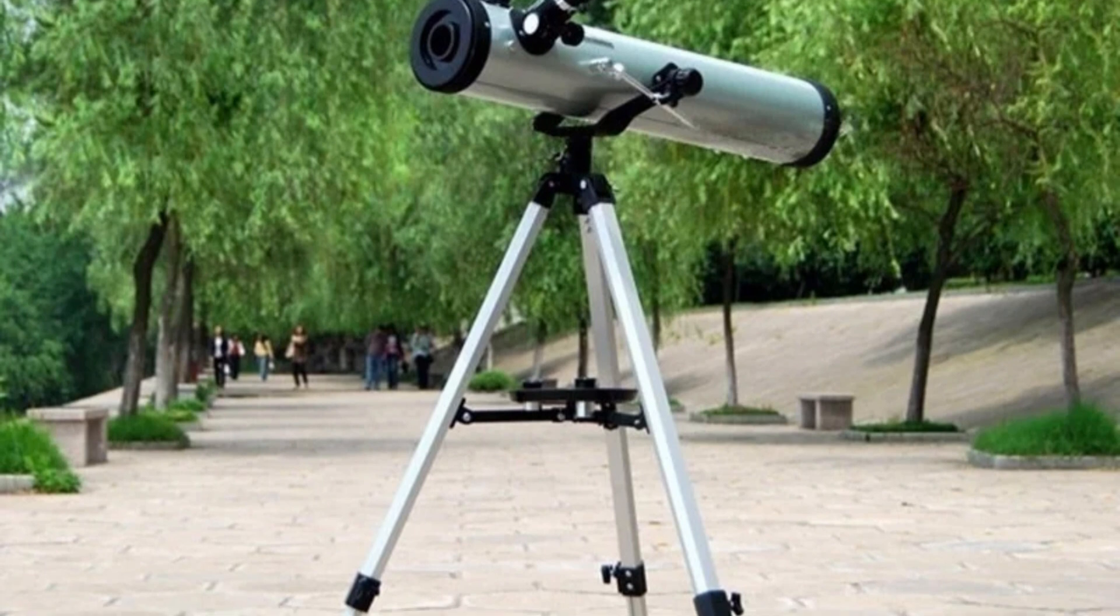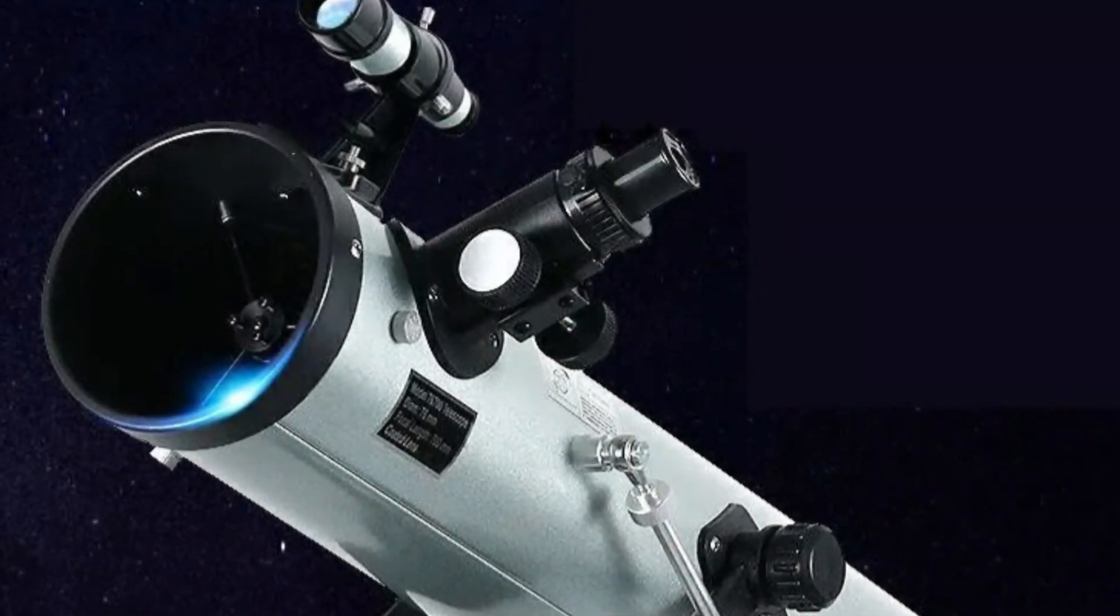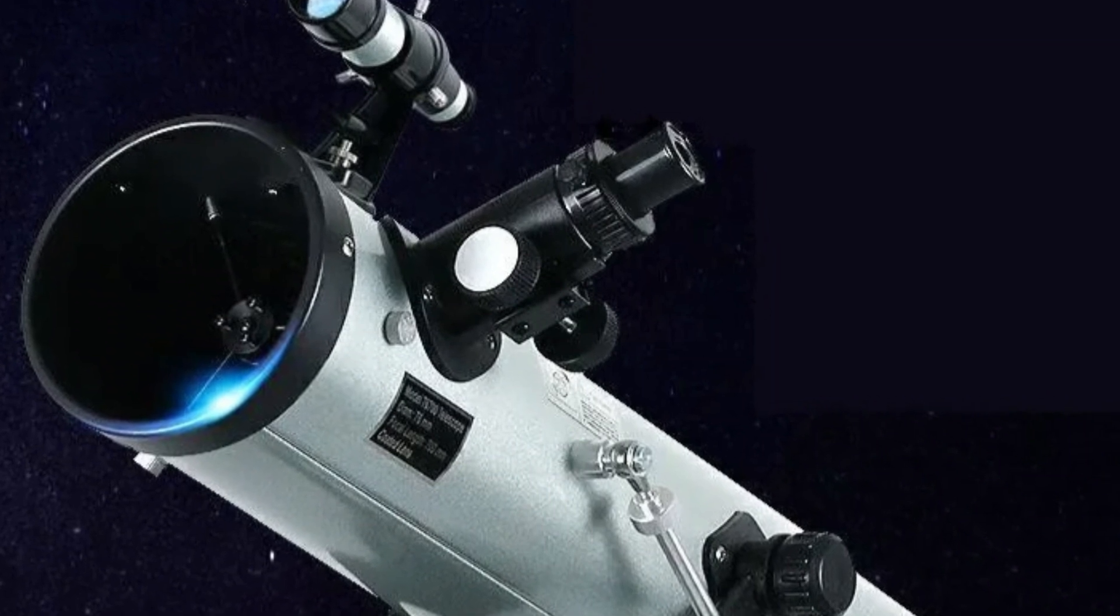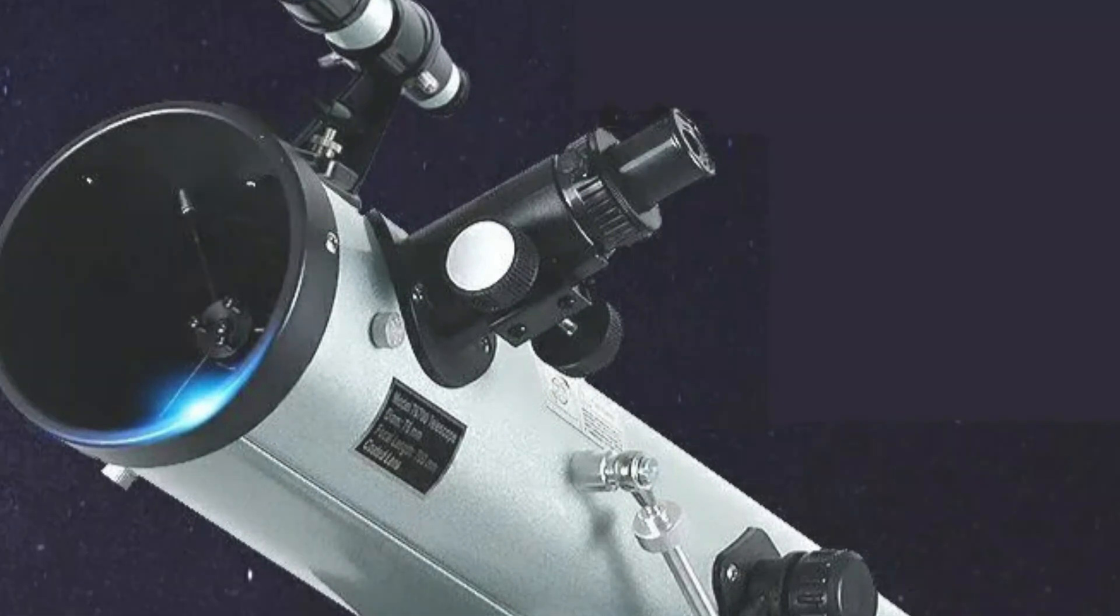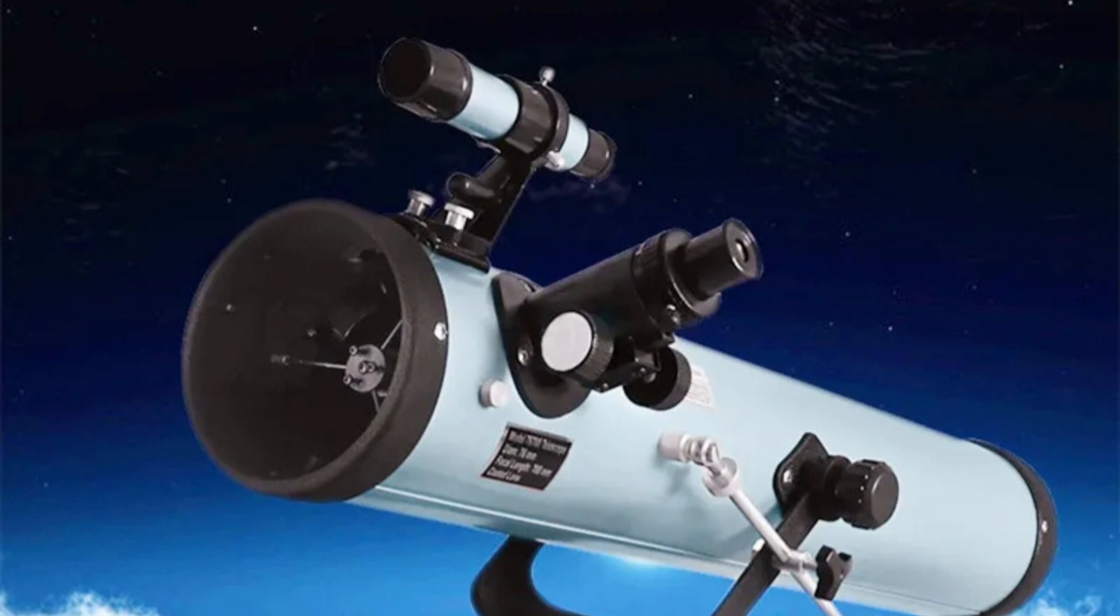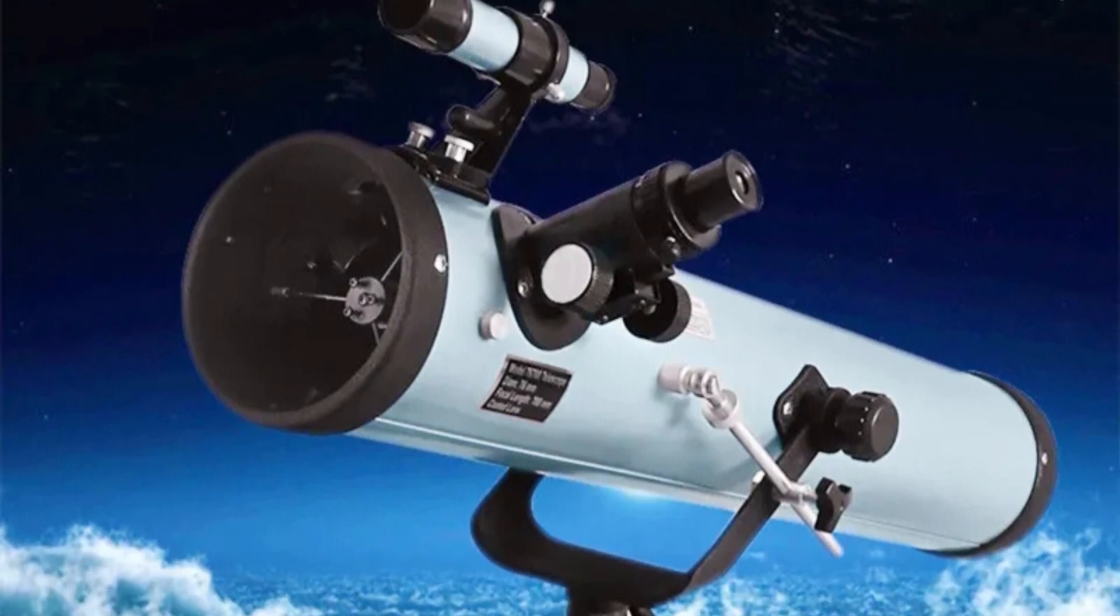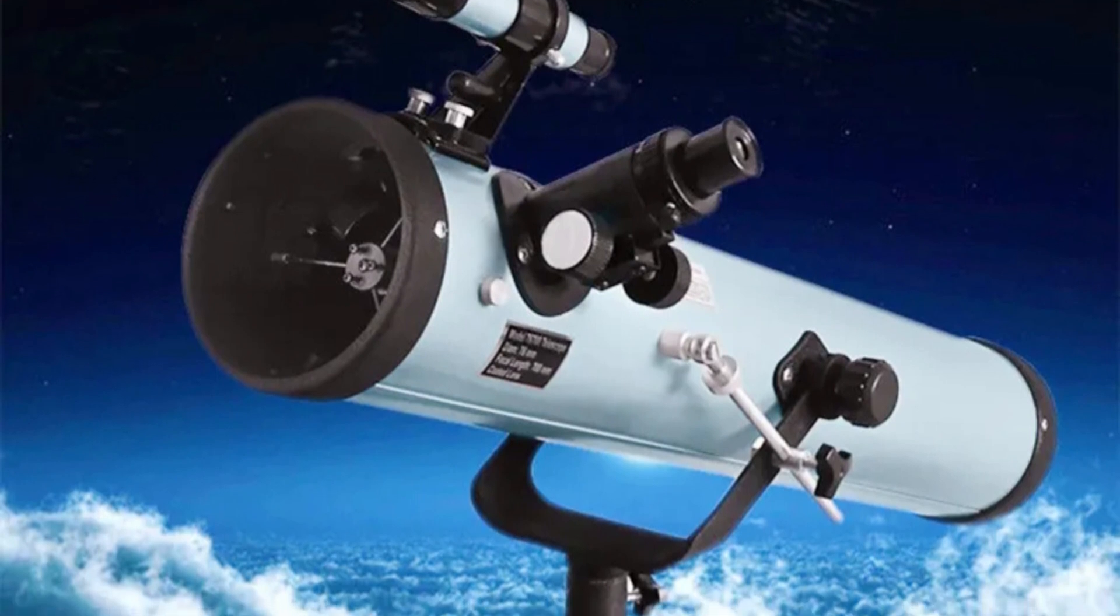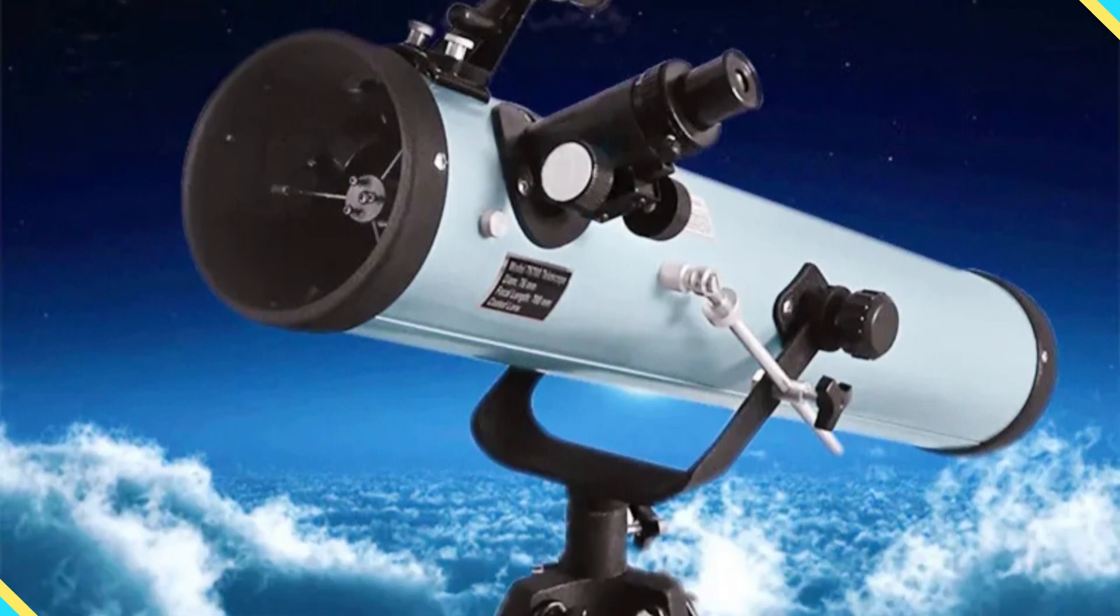The telescope's quality construction includes an adjustable aluminum tripod and optical components coated with high-quality aluminum film. Its versatile usage caters to both astronomical research and terrestrial observations, delivering crisp, clear and erect images. The telescope comes with essential accessories including eyepieces, a 3x Barlow lens, and a 1.5x Erector lens, enhancing its functionality and providing a seamless stargazing experience.